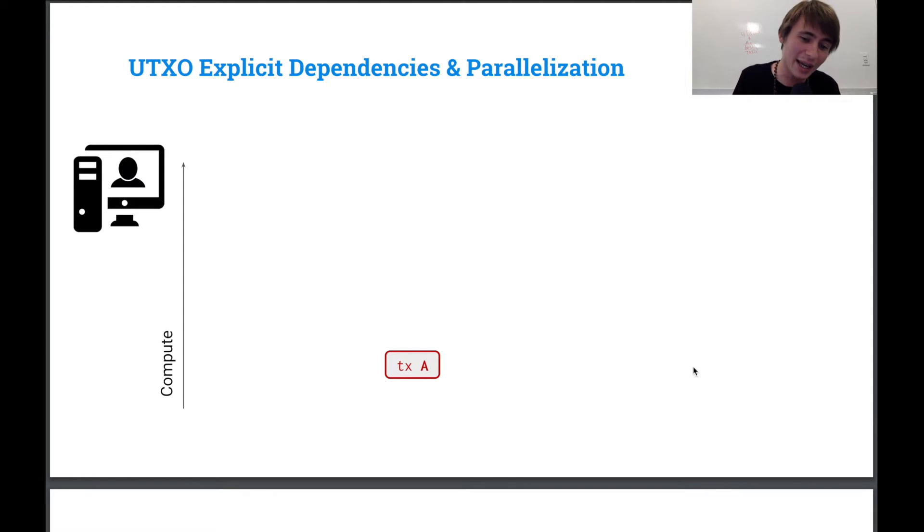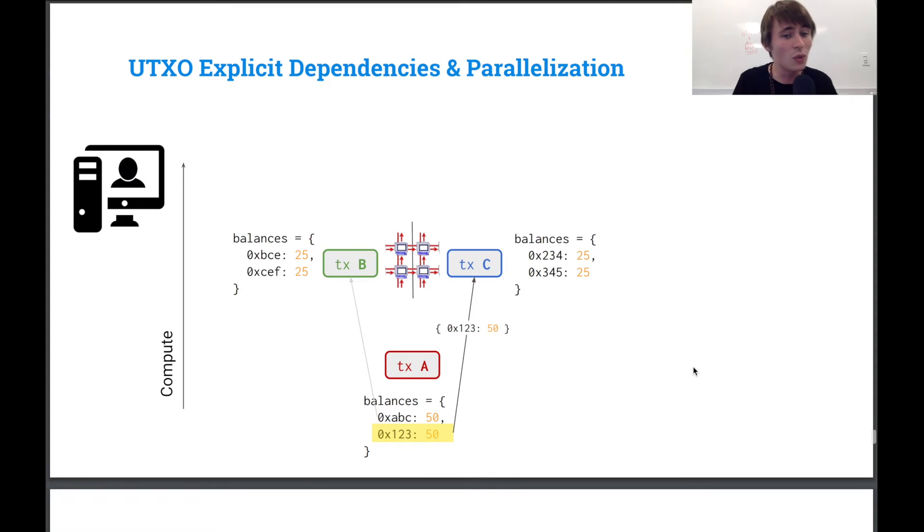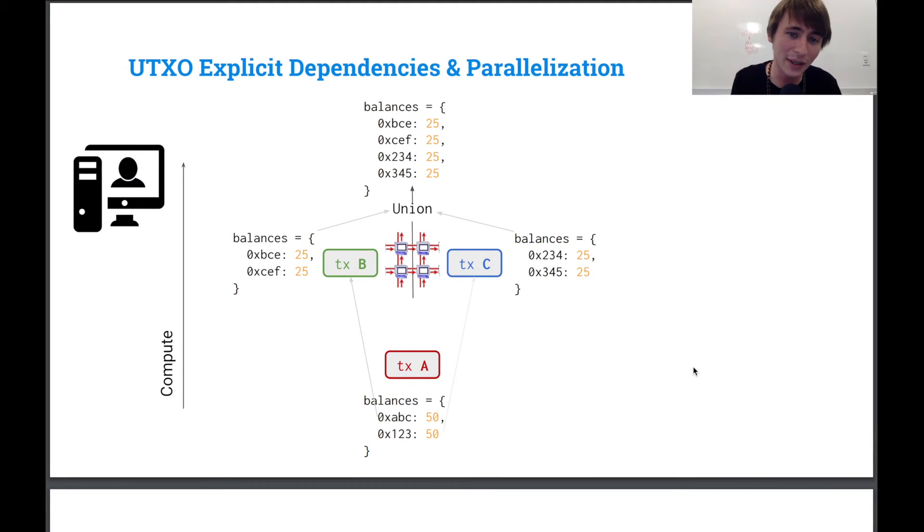Well, it's useful for parallelization. So we have transaction A. And when you apply it, you get the following state. And so what we can do is we can actually split up our state object. And we say, okay, transaction B relies on the address A, B, C. And transaction C relies on the address 1, 2, 3. And so when we apply these two transactions, we get these new state objects. And then we can just union these two state objects together. And we get our final state object with all the correct balances.